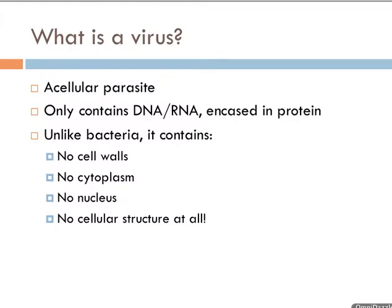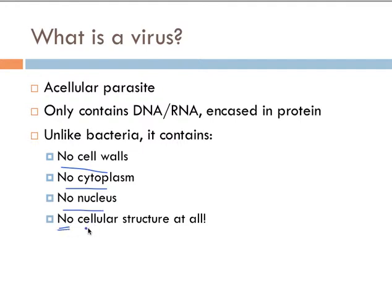So what is a virus? A virus is an acellular parasite. It only contains DNA or RNA, and that is encased in protein. And this is important to note: unlike bacteria, it has no cell wall, no cytoplasm, no nucleus. There is no cellular structure at all.